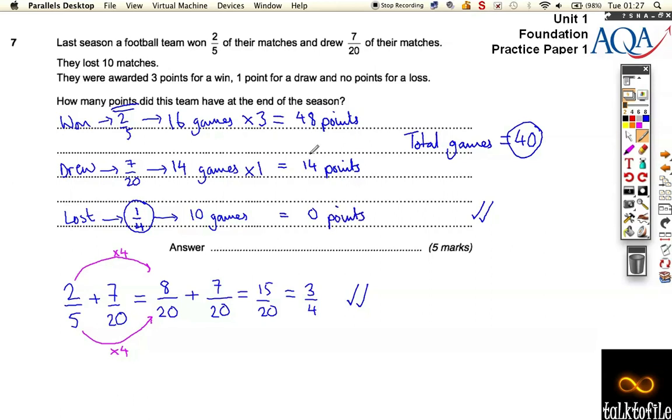So the total number of points they get is 40, 50, 58, 62 points is their total tally for the season.